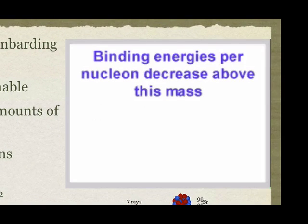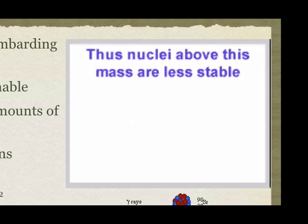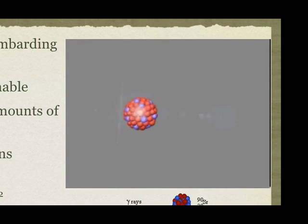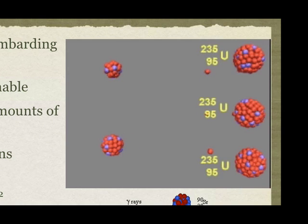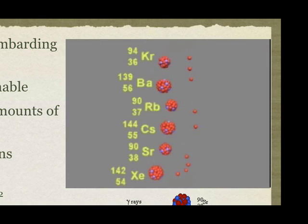Binding energy per nucleon reaches a maximum at a mass of about 56. Larger nuclei become more unstable as the mass increases. Very large nuclei, such as Uranium-235, can split when they are hit by high-energy neutrons. In nuclear fission, a large amount of energy is released, and two smaller, more stable nuclei, such as barium-139 and krypton-94 are formed. Additional neutrons are also released. If a critical mass of Uranium-235 is present, then most of the released neutrons are captured by other Uranium-235 nuclei and a nuclear chain reaction results, as can be seen in this animation. The energy from nuclear fission reactions is harnessed in atomic bombs and in nuclear reactors.